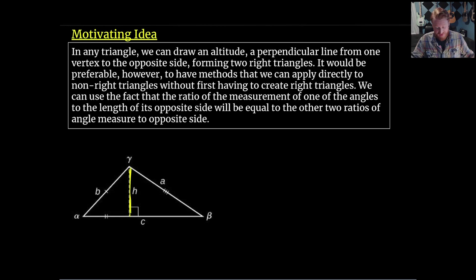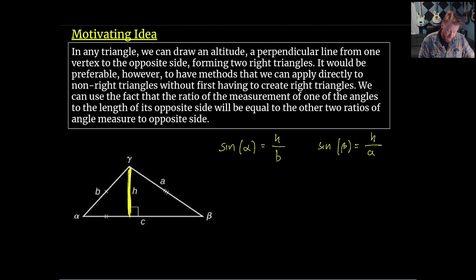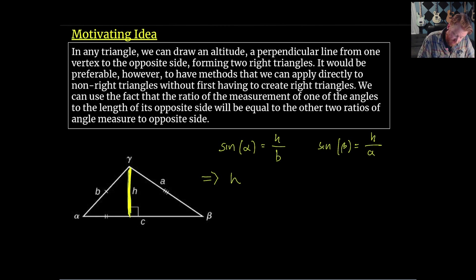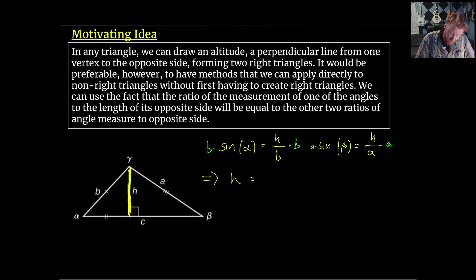That's a mouthful, so let's look at the picture. The sine of angle alpha equals the height H over side B, and the sine of beta equals H over side A — opposite over hypotenuse for both angles. Rearranging, if I multiply through, we get that H equals B·sin(alpha), and that also equals A·sin(beta). So we're seeing some equivalent relationships here, which is what that sentence says.